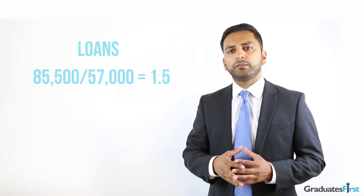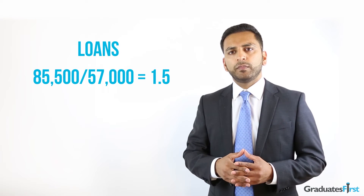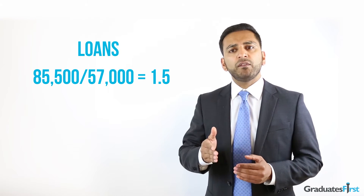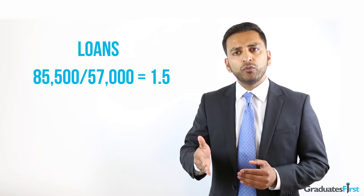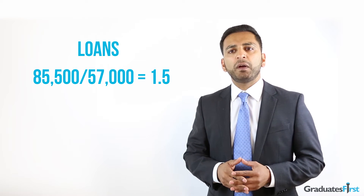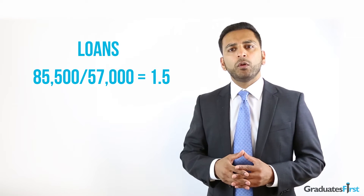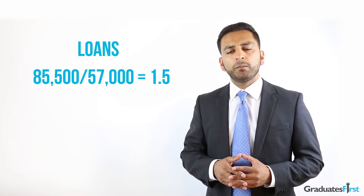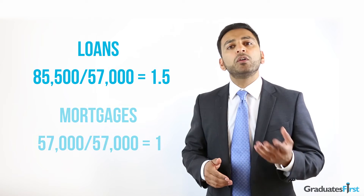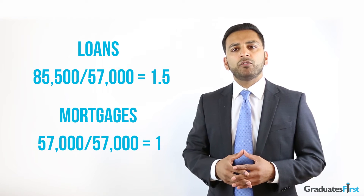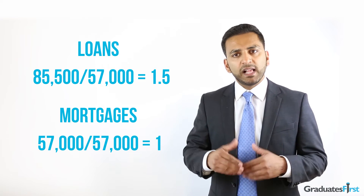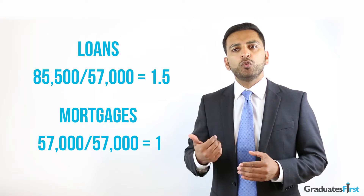Next, divide each number by the lowest number, which in this case is 57,000. For loans, this would be 85,500 divided by 57,000, which gives us 1.5. And for mortgages, you're dividing 57,000 by itself, which gives you 1.